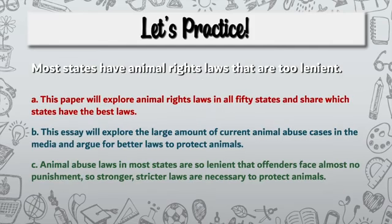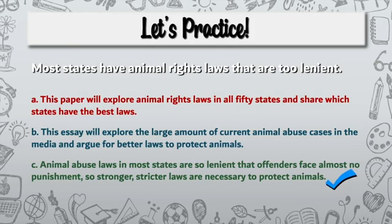Let's try number two. The prompt is: most states have animal rights laws that are too lenient. Choose among A, B, and C. The answer is C: animal abuse laws in most states are so lenient that offenders face almost no punishment, so stronger, stricter laws are necessary to protect animals.